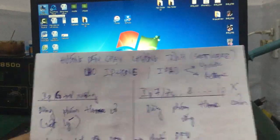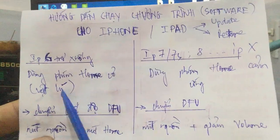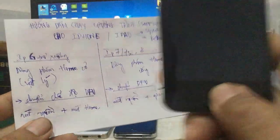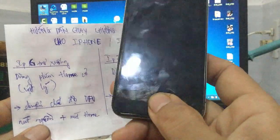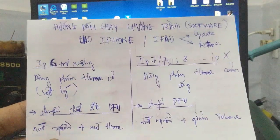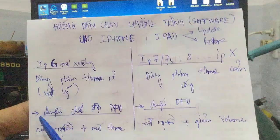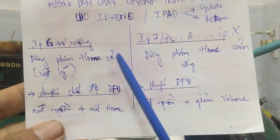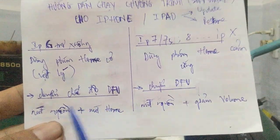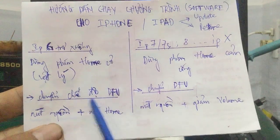Nếu các bạn xài dòng iPhone 6 trở xuống, dùng phím home cơ - nút home vật lý. Trước khi sử dụng phương pháp chạy chương trình, các bạn phải chuyển qua chế độ DFU. Cách làm là kết hợp nút nguồn với nút home để chuyển sang chế độ DFU.